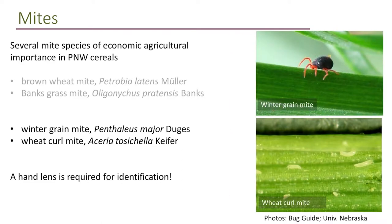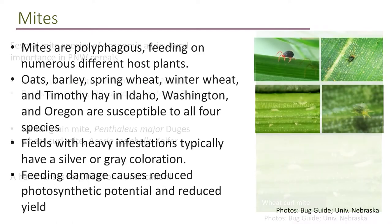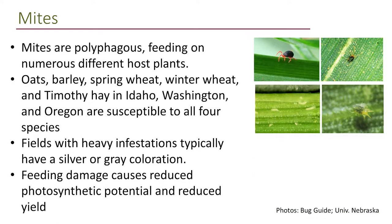The winter grain mite is easy to recognize because of its orange legs and very black, iridescent body. The wheat curl mite looks different from the others — like a little pale cigar — and is very tiny; you really can't see them at all without a hand lens, let alone identify them. You need to be looking for these guys because they are important as they can transmit virus.